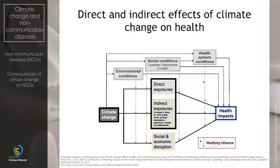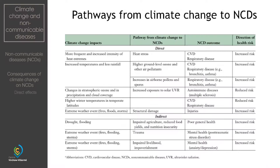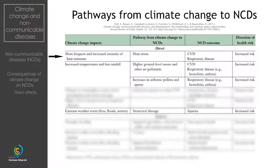These exposures can affect NCD development and progression both directly and indirectly. Human exposure to an increase in temperature or extreme heat can trigger a cascade of direct biological responses such as increased cardiac output, redistribution of blood flow away from the core organs to the periphery, reduced vasodilation, sweat rate and potential dehydration, all of which increase the risk of cardiovascular problems.